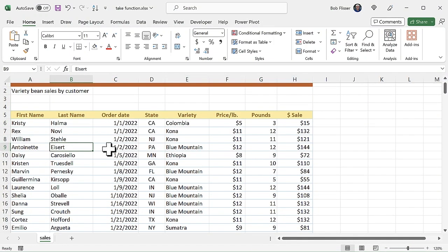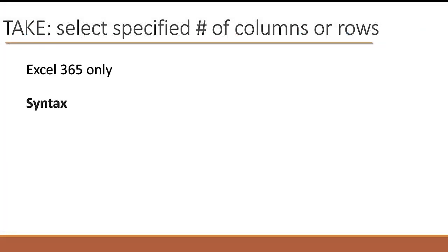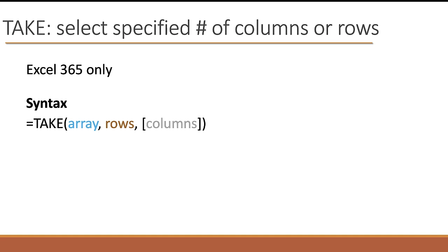Let's take a look at the syntax first. The TAKE function has three arguments, and the third argument is optional. We say equals TAKE, and the first argument is the array — that's the entire data set. The second argument is what rows do we want, and the optional third argument is what columns do we want. You could also get columns and not rows, and I'll show you how to do that.